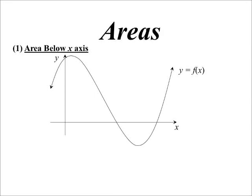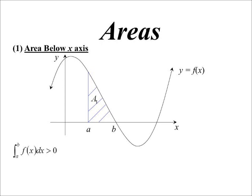Let's look at the idea of areas in more detail. The situation where we have area below the axis: here's my function. If I want to find the area from a to b that's above the axis, no problem — we just integrate and that gives a positive number. But if I want to go from b to c, because that is below the axis, the integral is going to be a negative number.